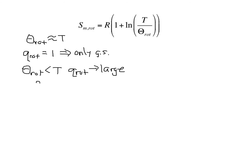For diatomics, rotational temperatures are typically on the order of 0.1 Kelvin to about 100 Kelvin. And so we can see that at normal temperatures — room temperature and above, 298 K and above — the rotational temperature is less than the temperature, and so rotations contribute a large amount to the degrees of freedom of the system.